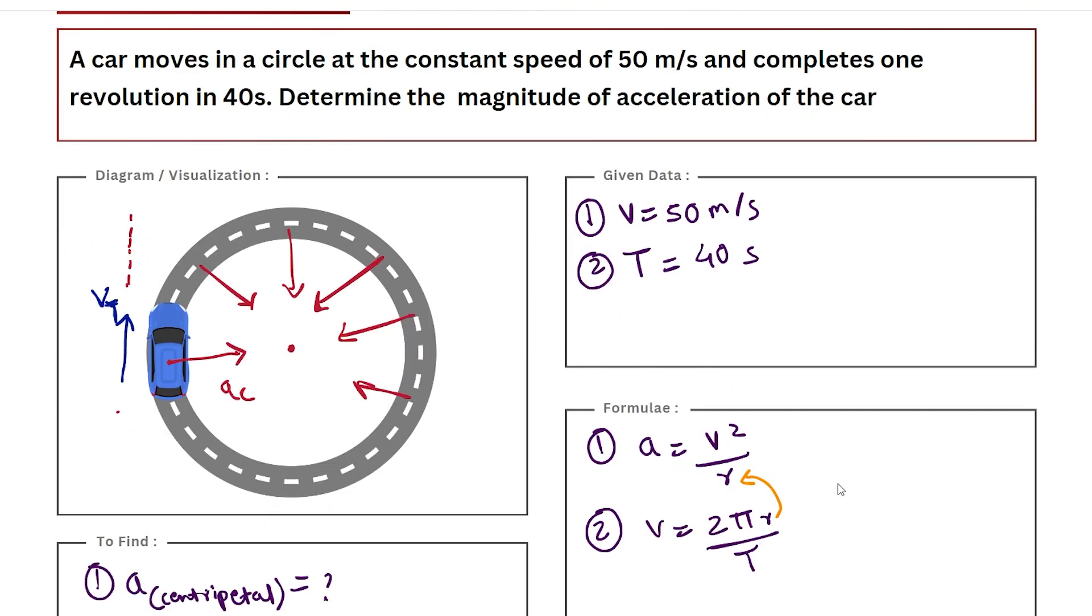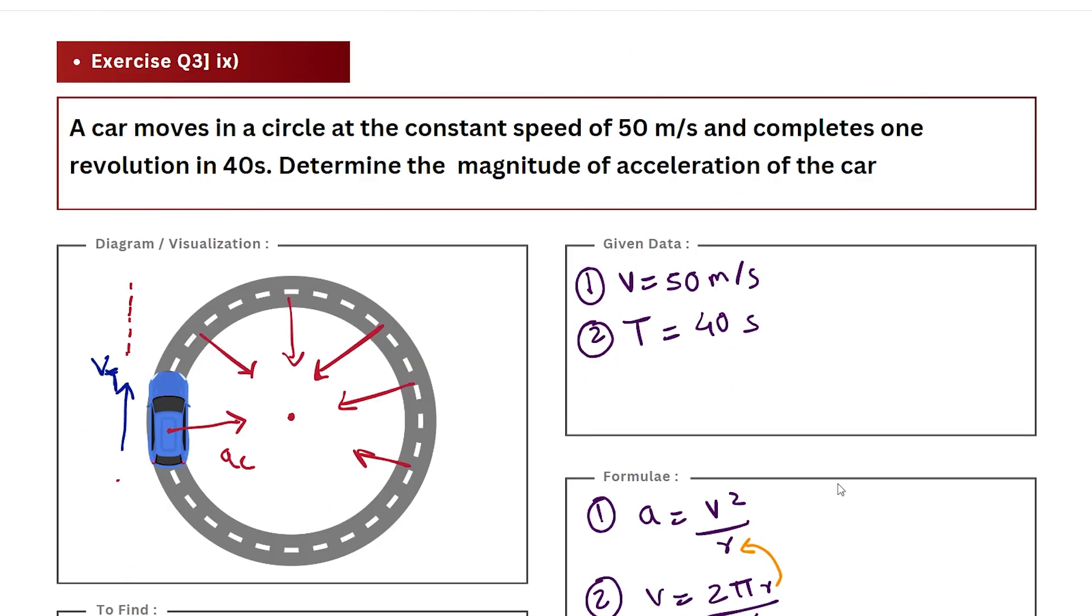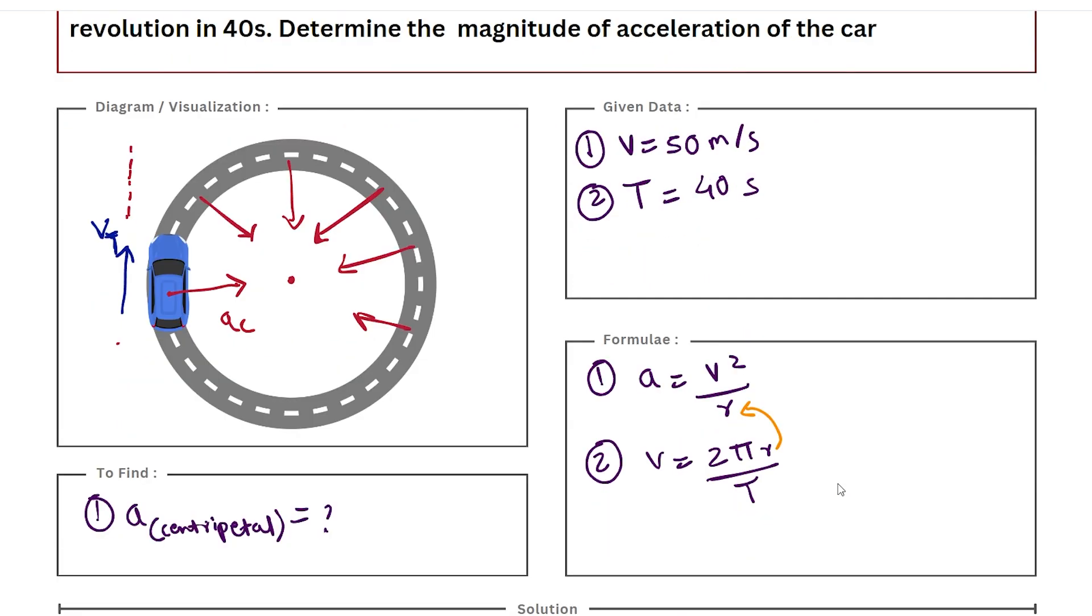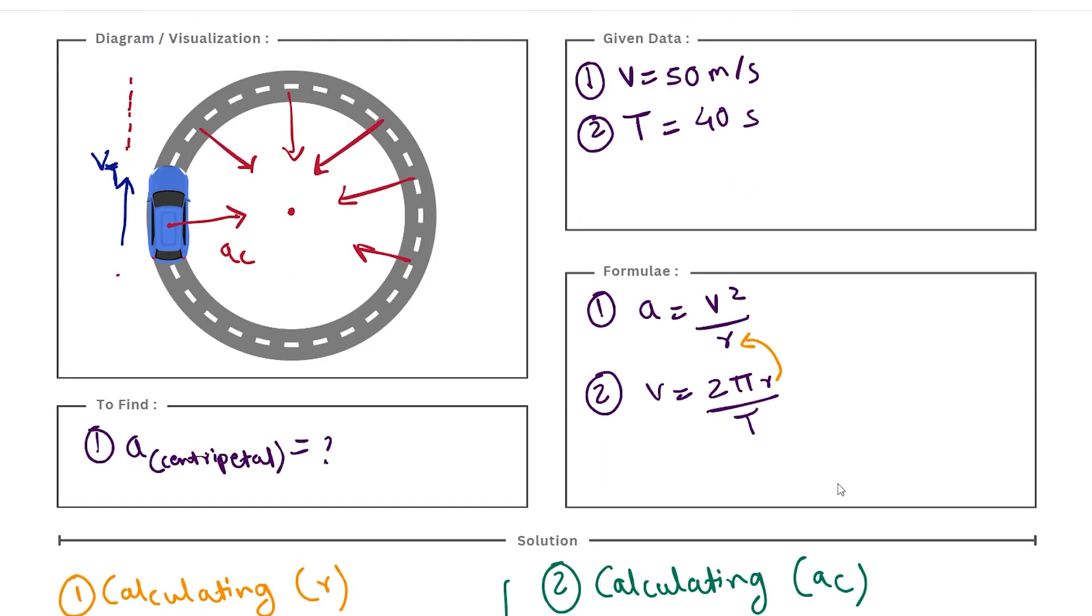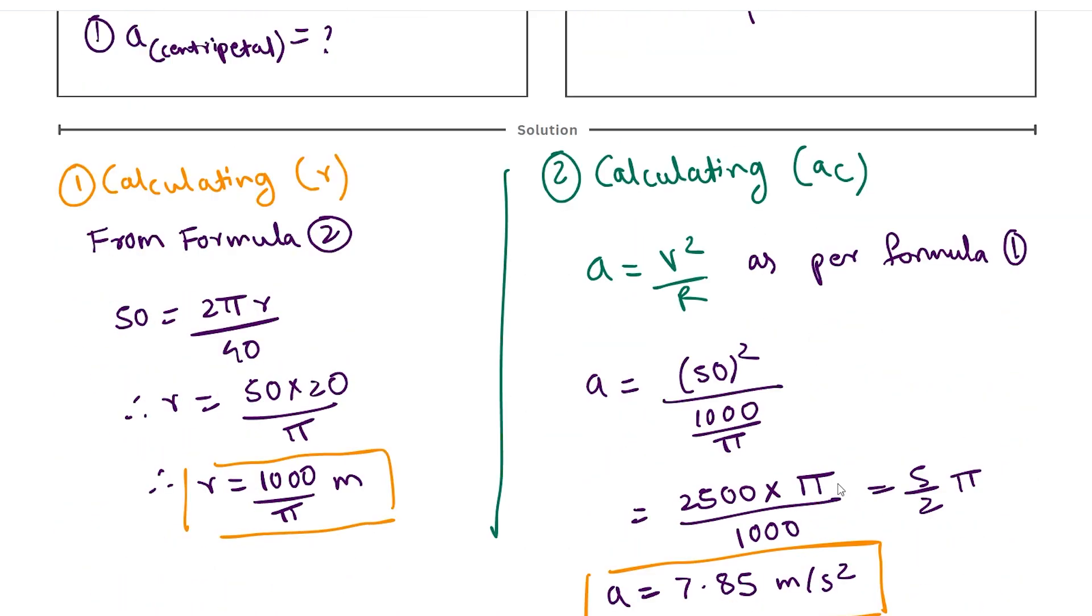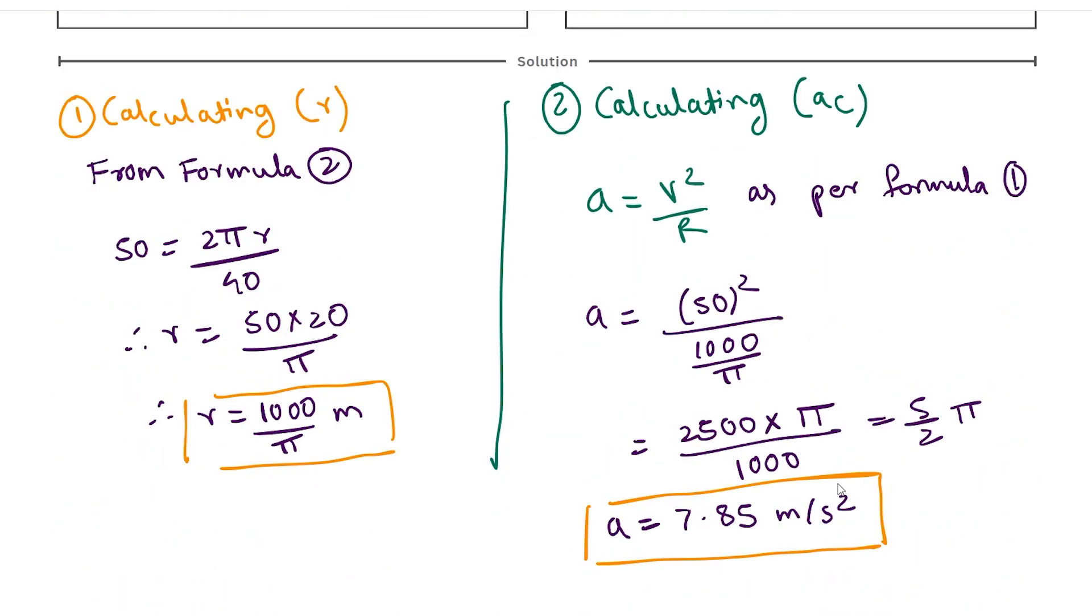So this is our value, which we were required to calculate. Make sure you write the final statement: the magnitude of the acceleration of the car is 7.85 meters per second squared. Here is the first screenshot with the given data and visualization, and then you have the second screenshot with the solution. With this, I hope this helped you. Thank you.